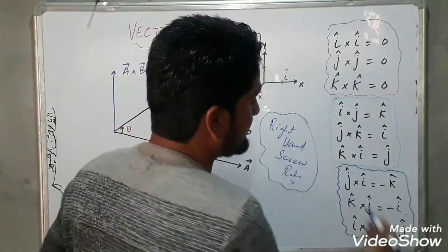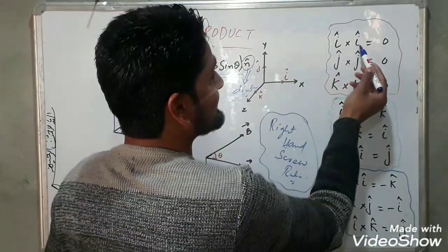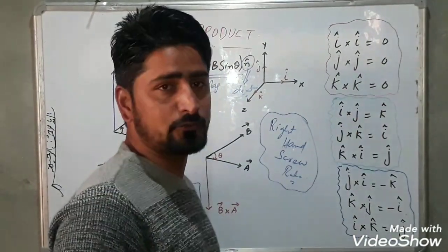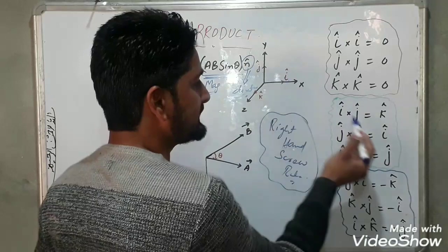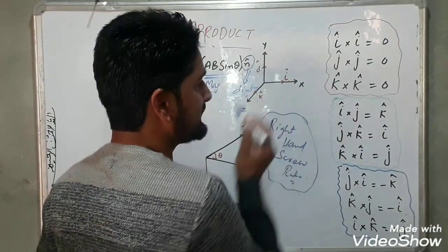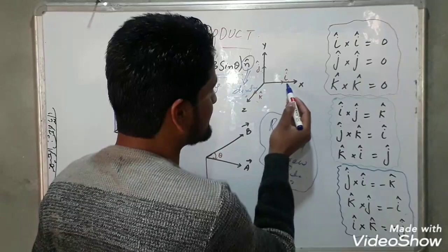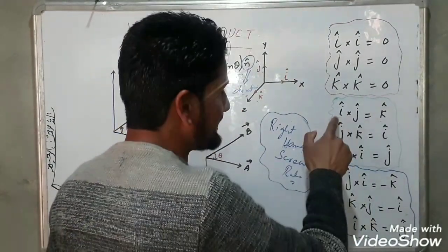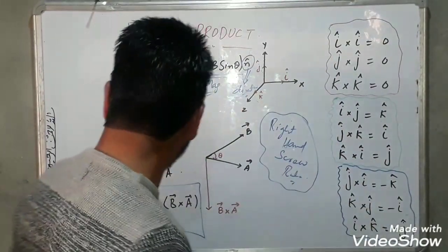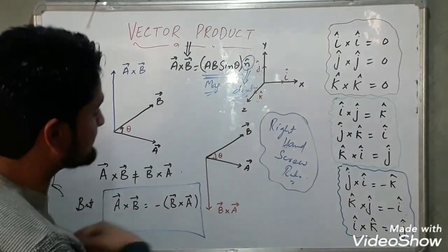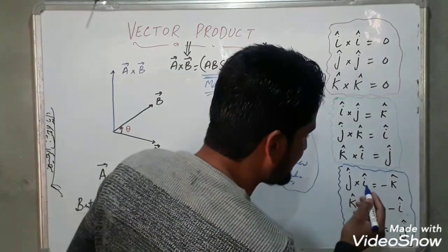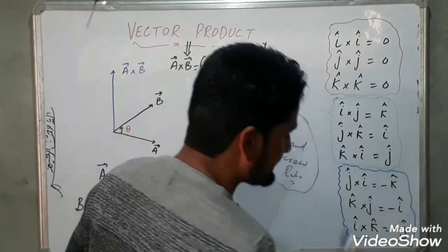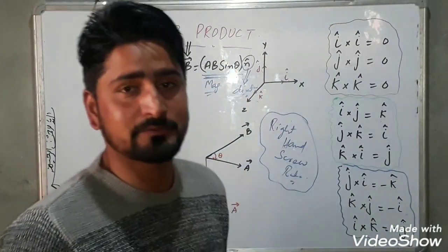Now for orthogonal unit vectors, we have these points written here. i cross i equals 0, j cross j equals 0, k cross k equals 0. But i cross j equals k, j cross k equals i, and k cross i equals j. In the reverse direction, j cross i equals minus k, k cross j equals minus i, and i cross k equals minus j — because a cross b always equals minus times b cross a.